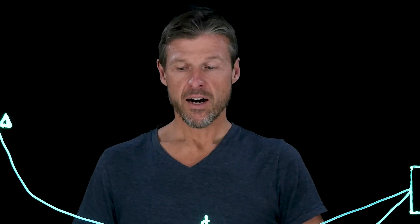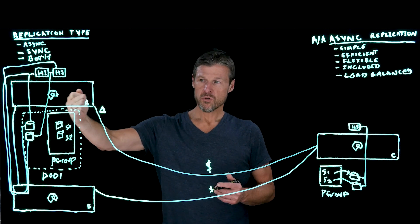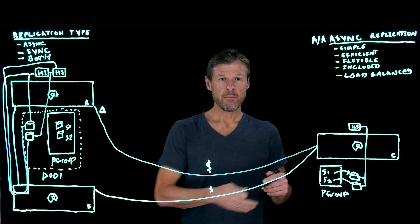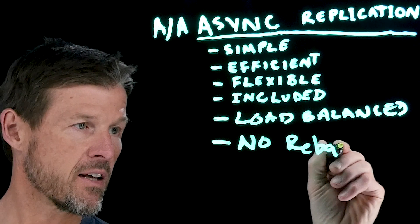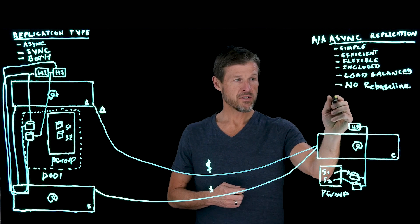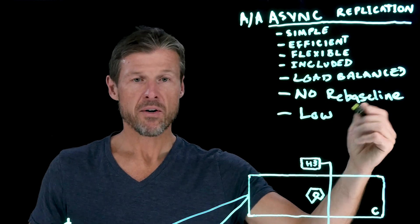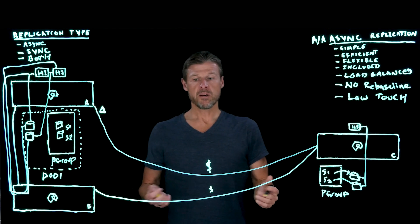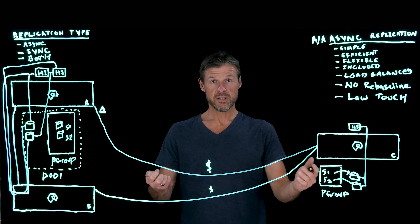That's one change. Another nice change is that because I have active-active data centers, if one site is lost, competing solutions would fail over and then have to recopy every single piece of data — what's known as rebaselining. With our solution there is no rebaseline. From a management perspective, all of this can happen without you doing anything — what's better than administrative ease is no administration at all. If array B fails, array A simply carries on — all of that happens automatically without administrative intervention.